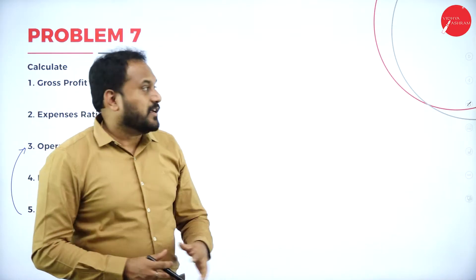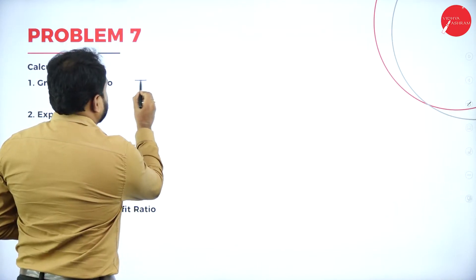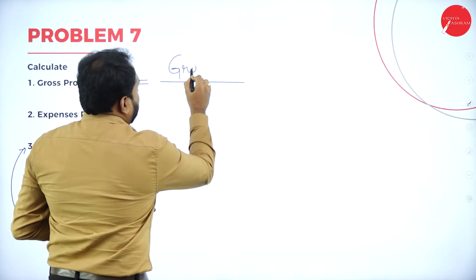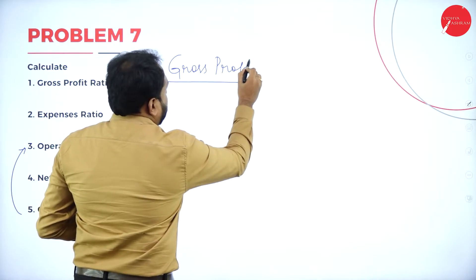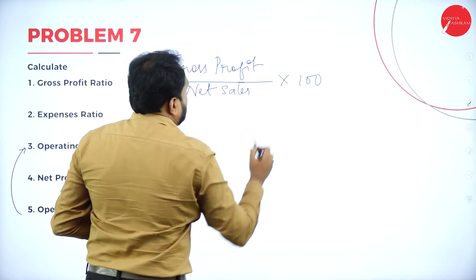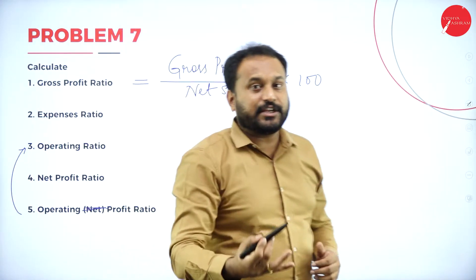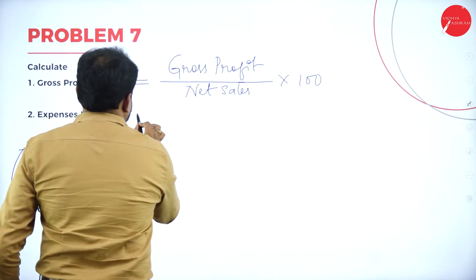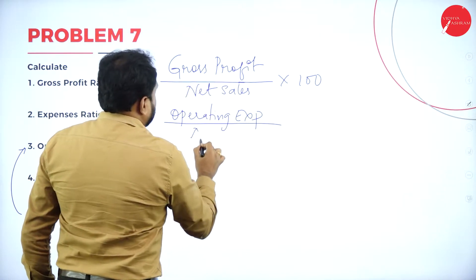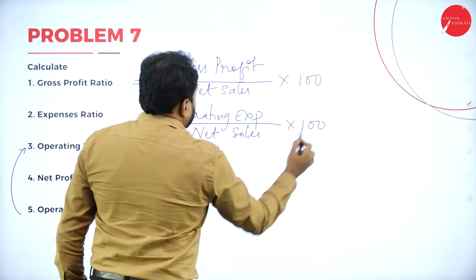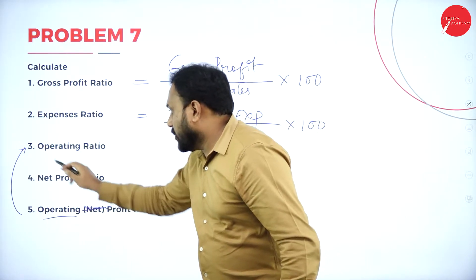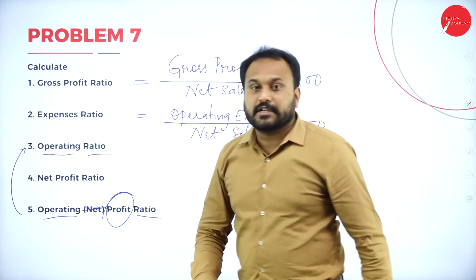Write the formulas and understand them by heart. For gross profit ratio, the formula is: gross profit divided by net sales into 100. For expenses ratio: operating expenses divided by net sales into 100. Then we have operating ratio, net profit ratio, and operating profit ratio — for each, write the numerator-denominator combination and calculate accordingly.